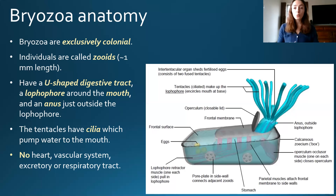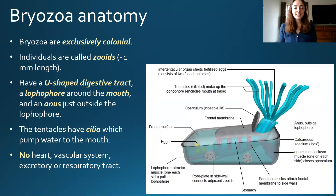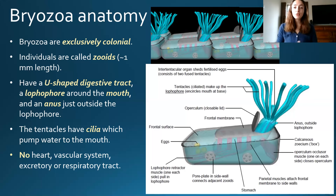Unlike a lot of the animals we've talked about so far, bryozoans don't have just one hole for everything — they have both a mouth and an anus. The anus is located outside of the lophophore structure, which is actually what gives them their second phylum name, Ectoprocta, meaning 'outside anus.' Other characteristics of zooids include no heart, no vascular system, and no excretory or respiratory tract.